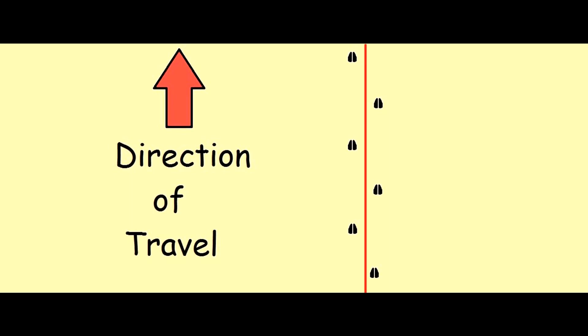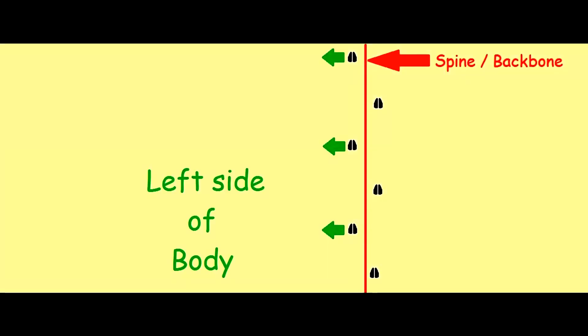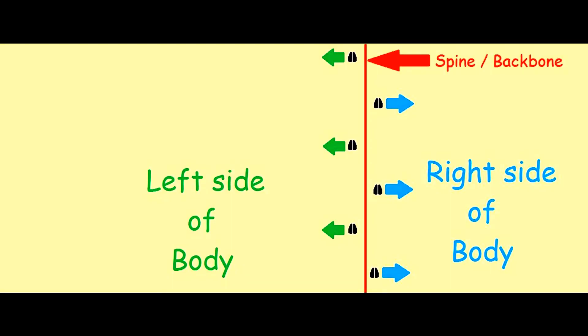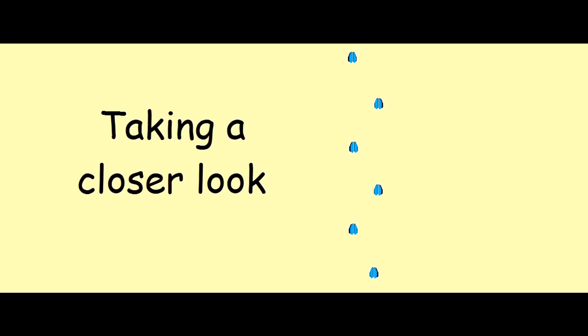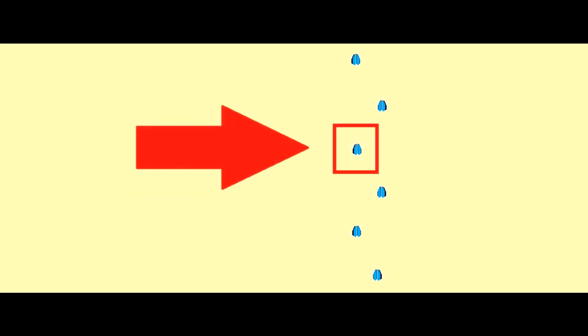Now we're going to draw a line straight down the center of these tracks. This line is going to represent the spine or the backbone. It helps us to be able to see that on the left side of that line is the left side of the body. The right side of the line represents the right side of the body. Now if you get down on your hands and knees and look closely at one of the tracks in this diagonal walking pattern, you're going to notice something.